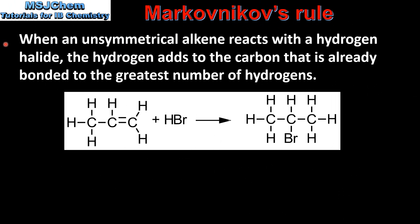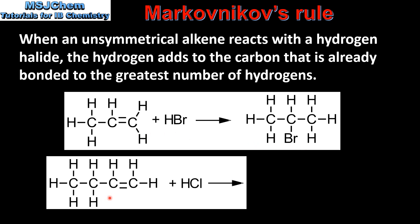So we've just looked at the explanation for Markovnikov's rule; now we'll look at the rule itself. When an unsymmetrical alkene such as propene reacts with a hydrogen halide, the hydrogen adds to the carbon that is already bonded to the greatest number of hydrogens. Therefore the major product of hydrogen bromide reacting with propene is 2-bromopropane.